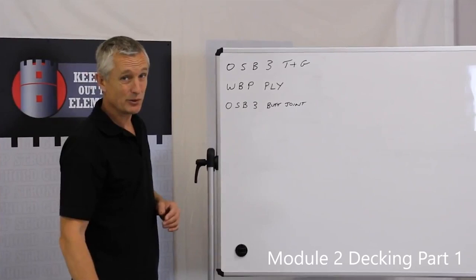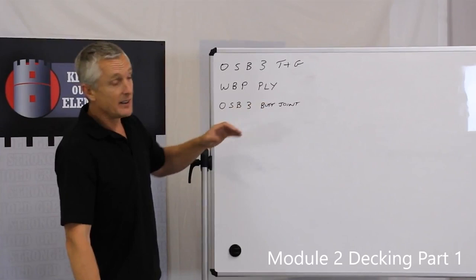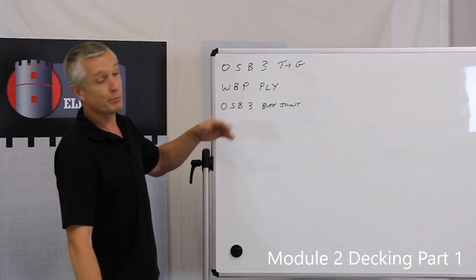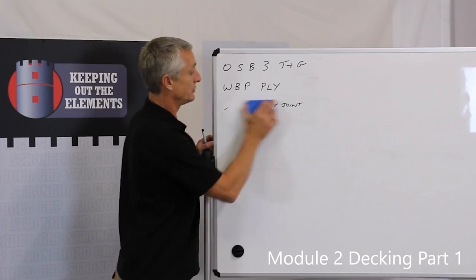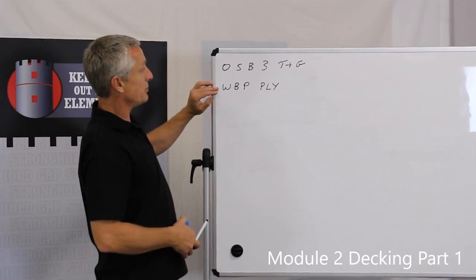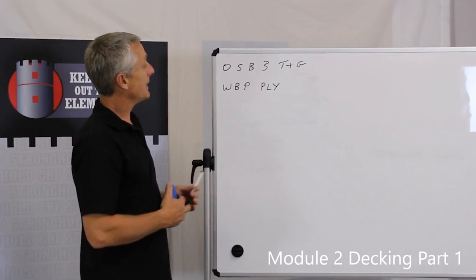Now we have three products that is possible to use. OSB3 butt joint and WBP ply. Basically there's not a lot between them and I would say that if you're going to use a butt jointed product then it's probably better to use the WBP ply because it's a little bit stronger. So through choice with butt jointed products use the WBP ply. So you can use this product and you can also use the ideal one which is the OSB3 TNG.